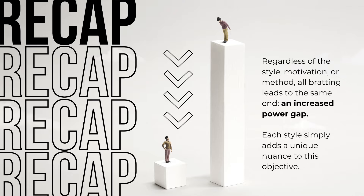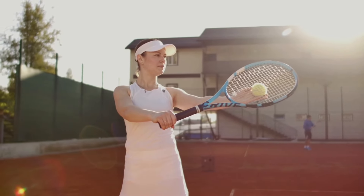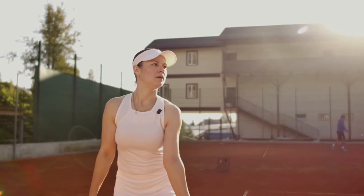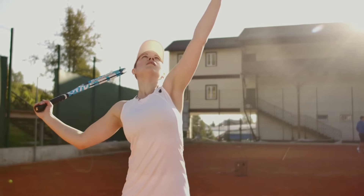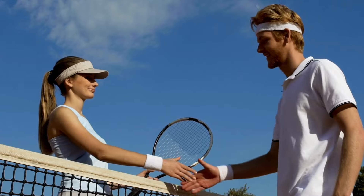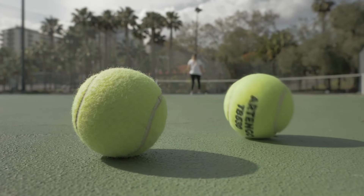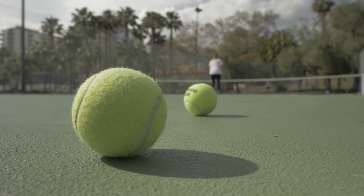With that said, let's look at brat taming and brat handling, because the approaches could not be more different. Think of each approach using the analogy of a tennis match. Consider the bratty subtype — regardless of their style — as a player on one side of the net, constantly hitting tennis balls over to your side of the court. Brat handling would be to volley back with the bratty subtype in this mutually pleasing game. Brat taming, on the other hand, would be to set down your racket and walk off the court.